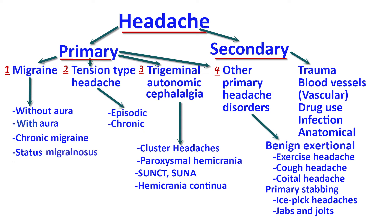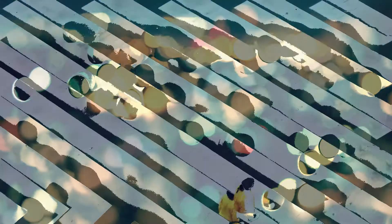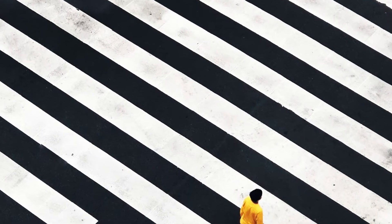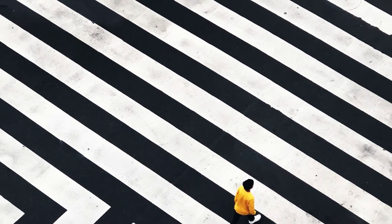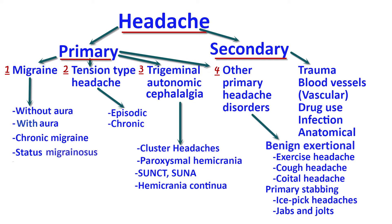Migraines can present with aura or without aura. An aura is defined as a neurological symptom that precedes or accompanies the headache — most often it precedes it. Auras come in many different forms. The most common type is a visual aura, where patients report blurring of vision, seeing dots in their visual field, and seeing zigzag lines in their visual field, preceding the migraine attack.